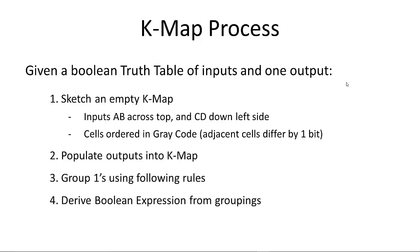The K-map process we just went through: Given a Boolean truth table of inputs and one output value, sketch an empty Karnaugh map. If you have four variables, it'll be A, B across the top, and C, D down the left side. We just had two variables. Cells are ordered in gray code order, where adjacent cells can only differ by one bit.